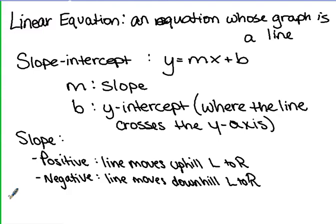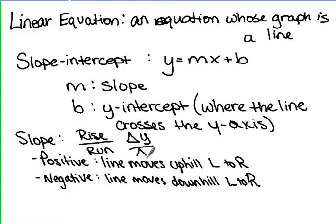We know slope to be rise over run. We can also call it the change in y over change in x. That little triangle is a delta — the Greek letter delta — which represents change. So slope can also be written as rise over run or change in y over change in x.